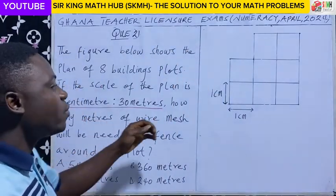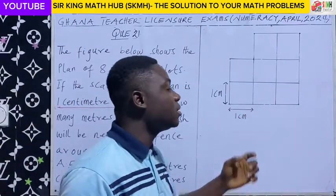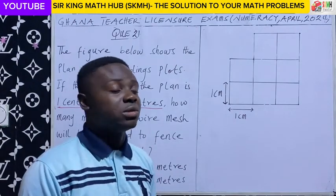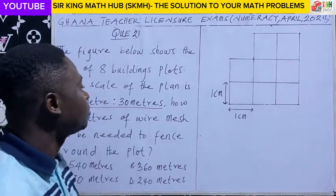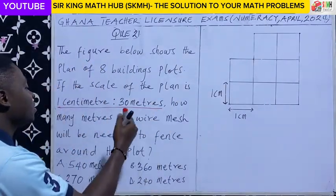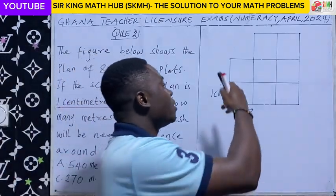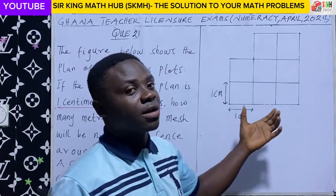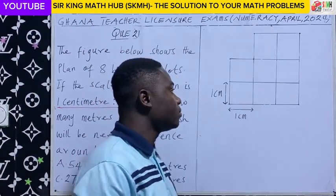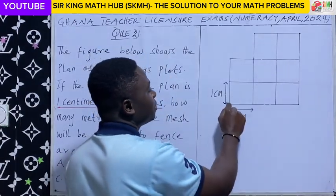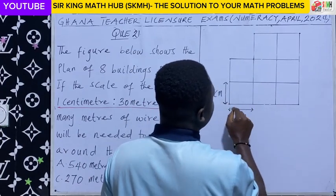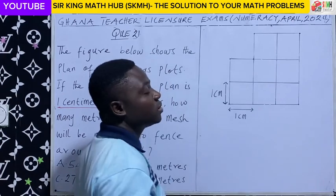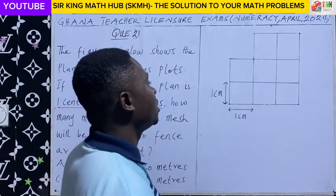Every 1 cm on the plan is equivalent to 30 meters on the ground — that is the meaning of the scale. The question asks how many meters of wire mesh will be needed to fence around this plot, so let's do our calculation using the plan and calculate the length of wire mesh needed.